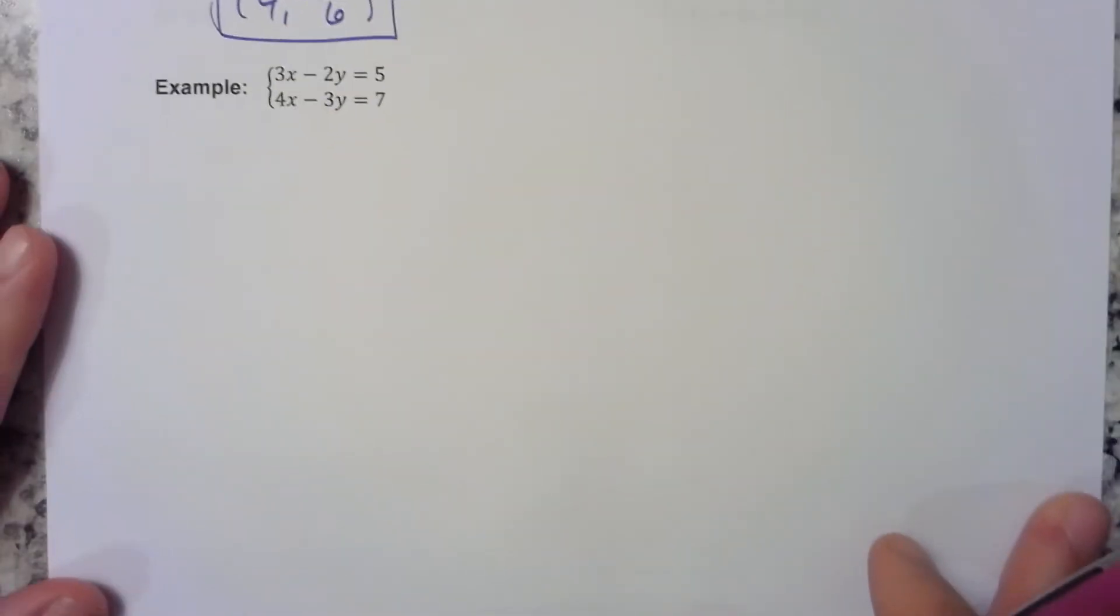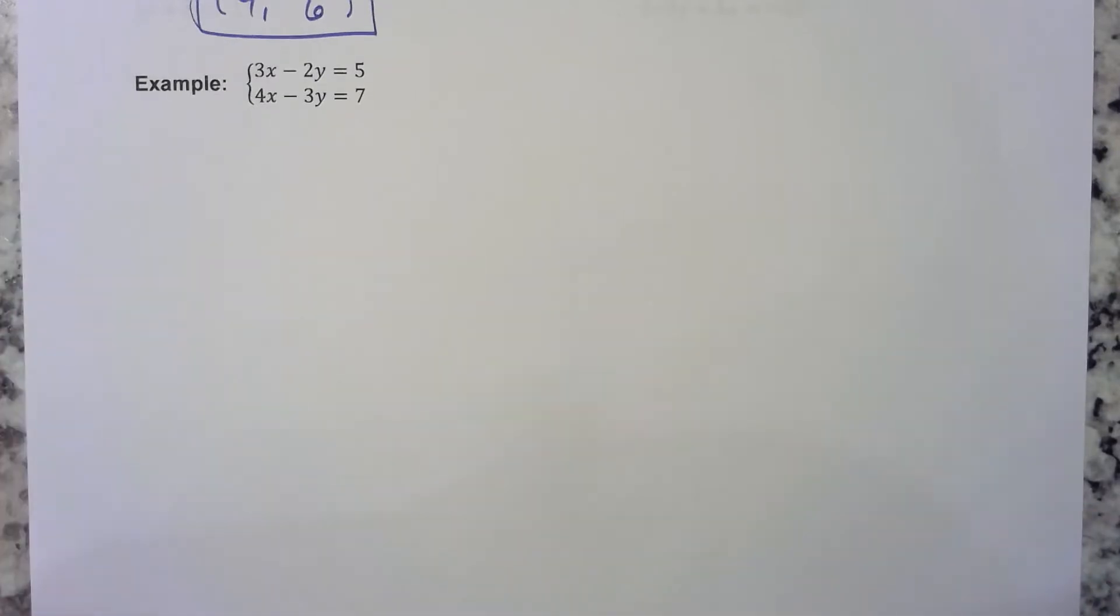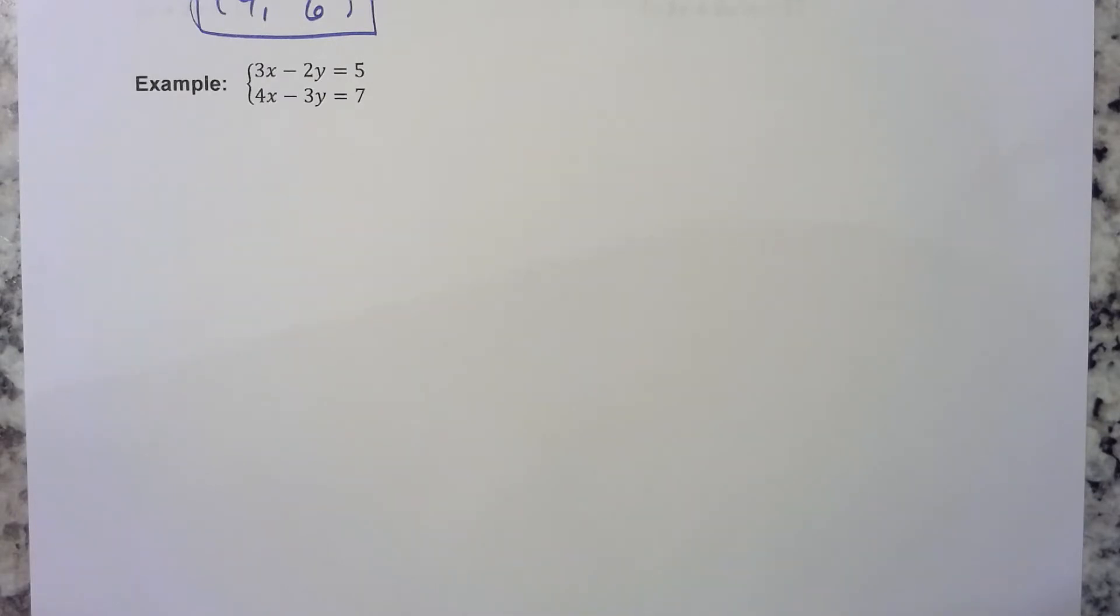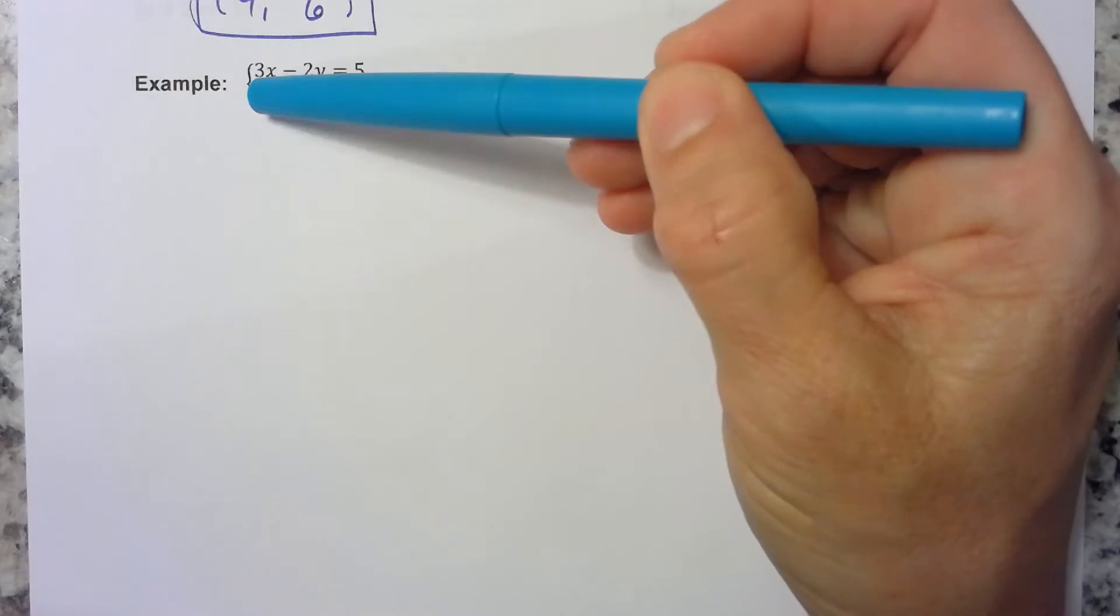So what if we have a problem like this one, where we can't just multiply one equation by some number to make one of the variables disappear? Well, in a case like that, we can multiply them both by something. Remember, as long as you do the same thing to both sides, it's okay. You can either make the x's go away, or you can make the y's go away. It really doesn't matter. So since we've been making the y's go away everywhere else, let's make the x's go away. To make the x's go away, these two numbers, the 3 and the 4,